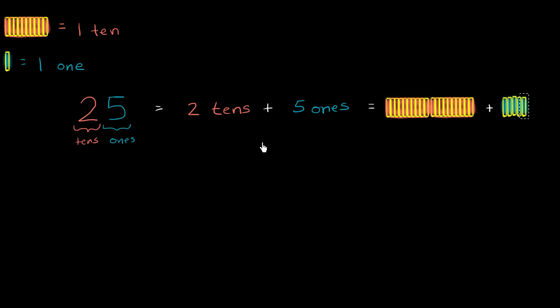And so these are all different ways of representing the same quantity. Twenty-five is two tens and five ones. This two is in the tens place, the five is in the ones place.